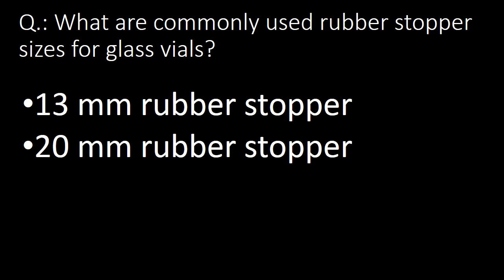Next very useful question: what are the commonly used rubber stopper sizes for glass vials? The answer is 13 mm and 20 mm rubber stoppers are commonly used for glass vials.